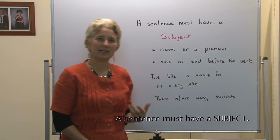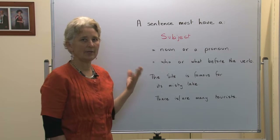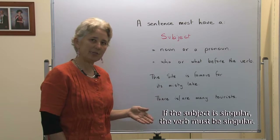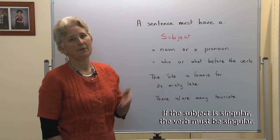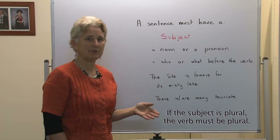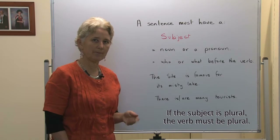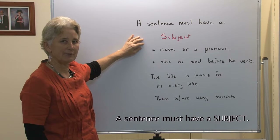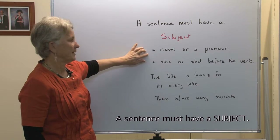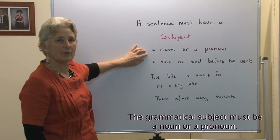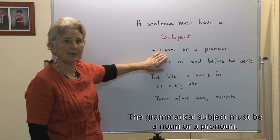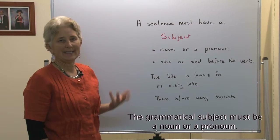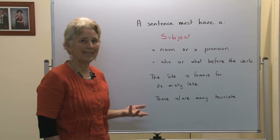We're going to underline the subject of every sentence and make sure that the subject agrees with the verb. If the subject is singular, the verb must be singular. If the subject is plural, the verb must also be plural. Every sentence in English must have a grammatical subject. The subject is a noun or a pronoun. A noun is a thing or a person, or the pronoun takes the place of a noun — it's usually he, she, it, they, we, etc.